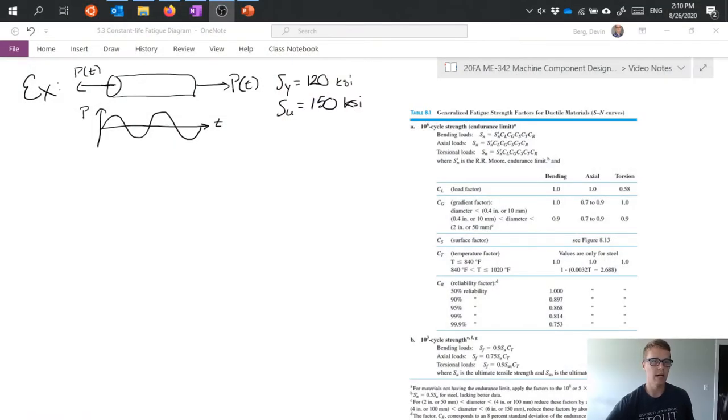So on the screen I have some setup for what we're talking about here. Basic idea is you have a part, cylindrical part, loaded axially with some sort of cyclic loading and we have some material properties that tell us the yield strength and the ultimate strength for this part.